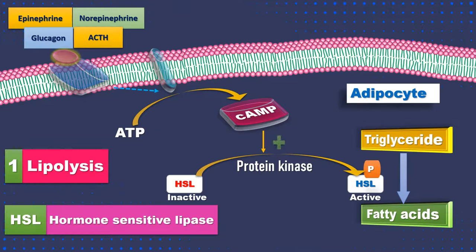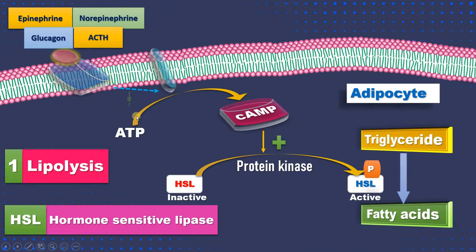Cyclic AMP stimulates protein kinase so that inactive hormone-sensitive lipase becomes active hormone-sensitive lipase through phosphorylation. Note that protein kinase itself exists in both inactive and active forms. This is how hormones like adrenaline, noradrenaline, glucagon, and ACTH stimulate and enhance the activity of hormone-sensitive lipase, so that more and more stored triglycerides in adipose tissue undergo hydrolysis to yield fatty acids.